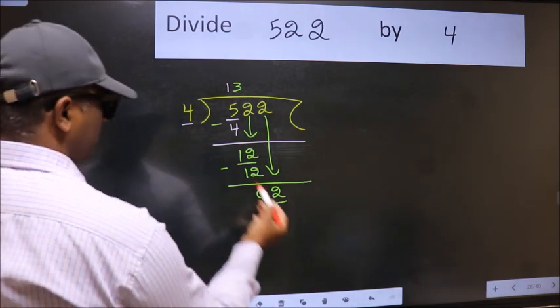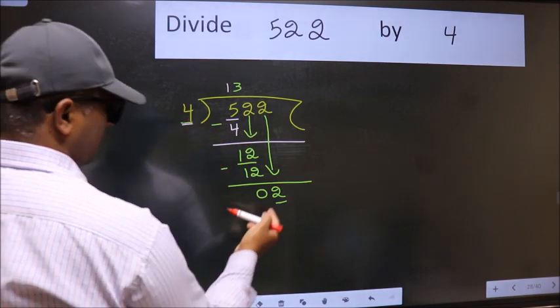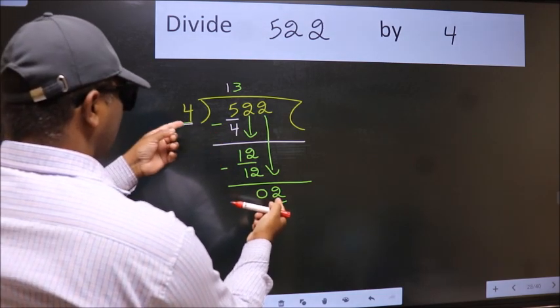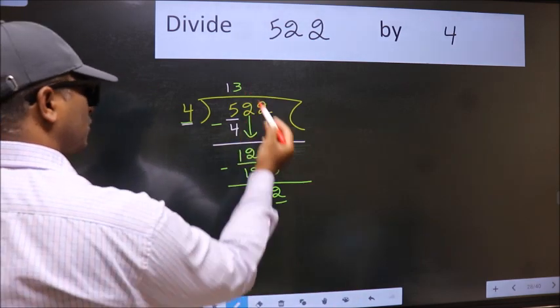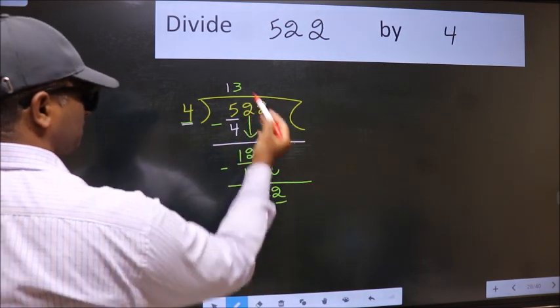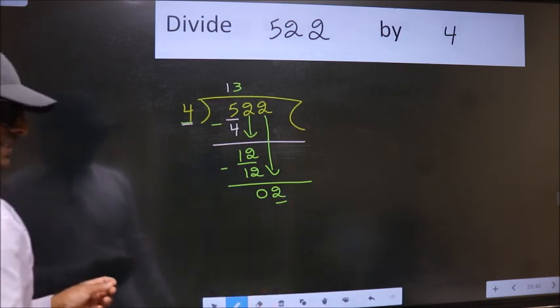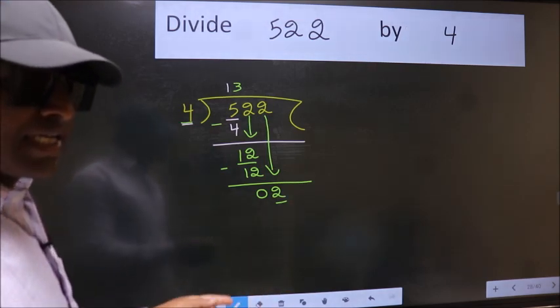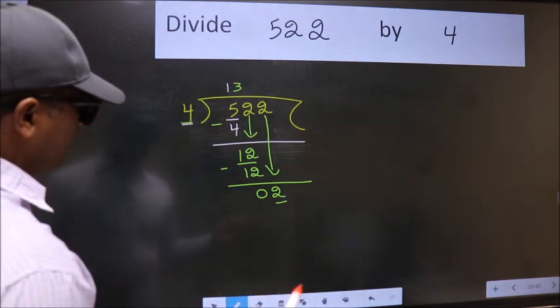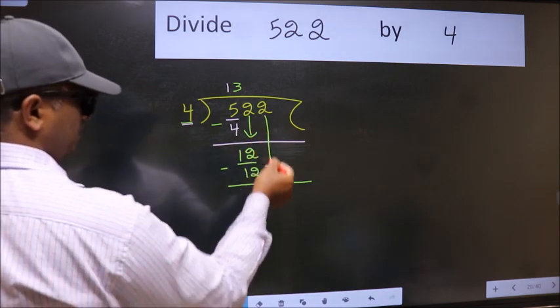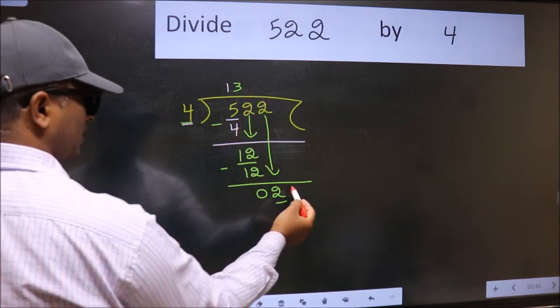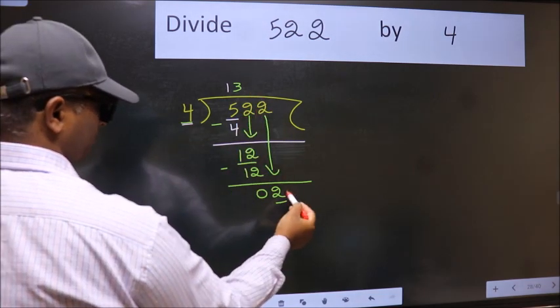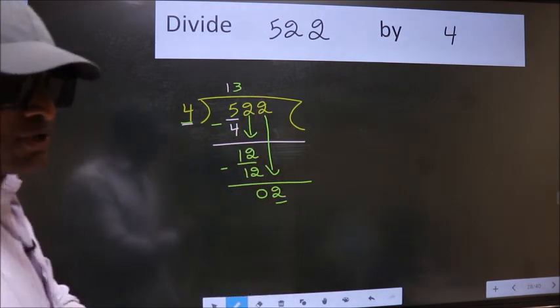Here we have 2 and here 4. 2 is smaller than 4. So what many do is they directly put a dot and take 0, which is wrong. Why is it wrong? Because just now you brought this number down, and in the same step you want to put a dot and take 0, which is wrong.